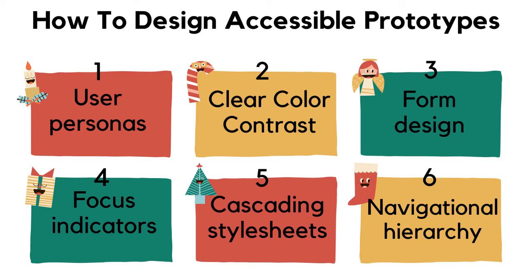Fourth way to design accessible prototypes: focus indicators. Focus indicators make elements stand out against the background — particularly important for users with impaired motor function navigating with a keyboard, or people with sight difficulties. You can create focus indicators by adding interactions to links and button elements such as highlighting, outlining, shadowing, fading, or adding movement. Focus indicators help users easily navigate web pages using Tab and Shift+Tab buttons.